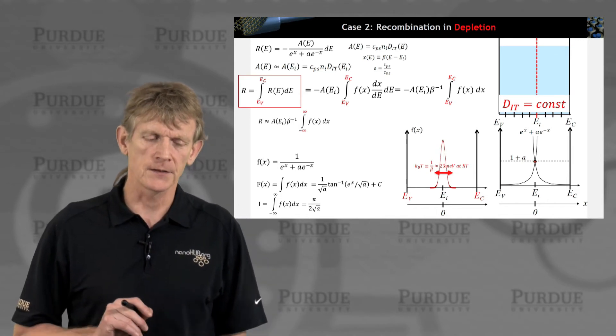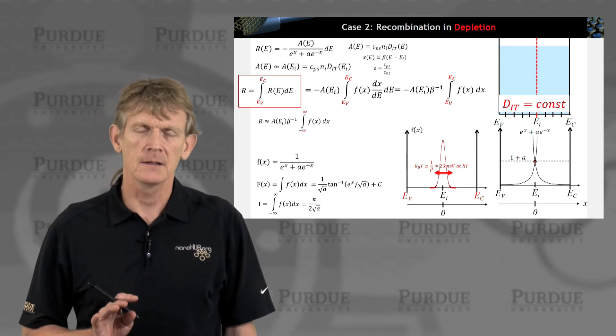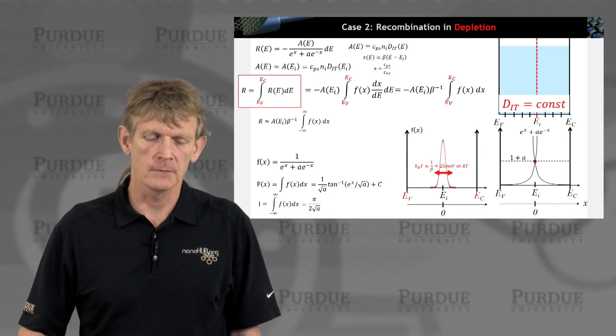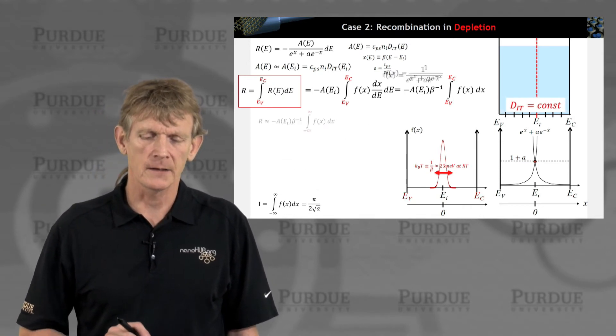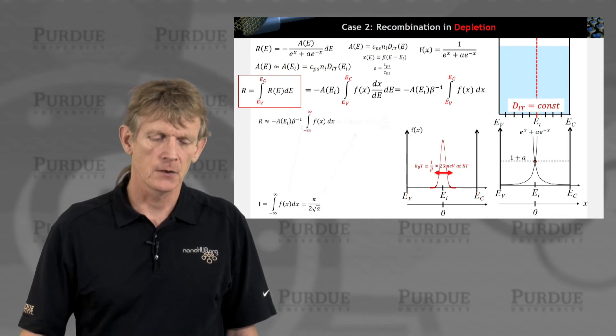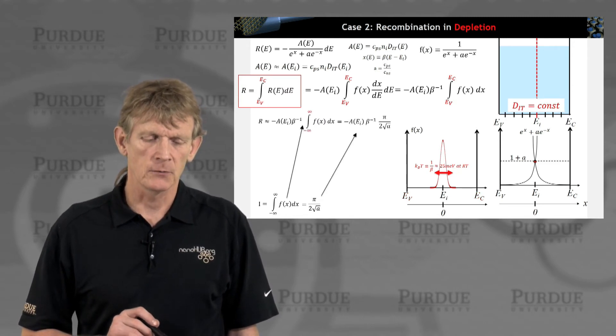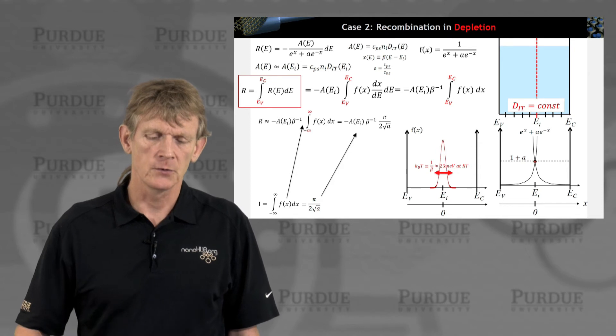That's pi over 2 square root of a. That's a pretty cool exercise to do. But we're not going to focus on the math here. But we can now plug these numbers in. Here we are.